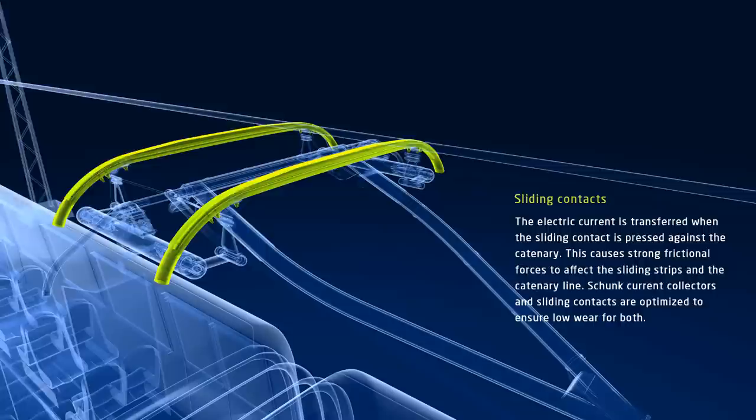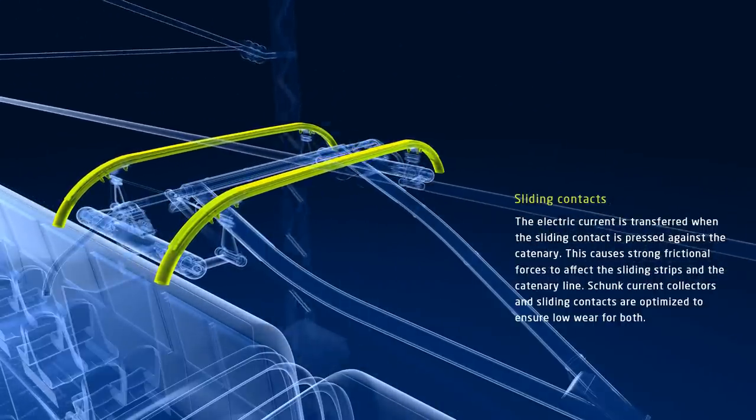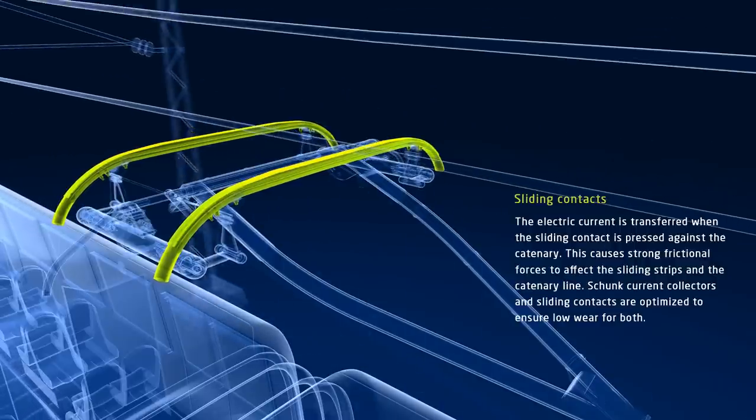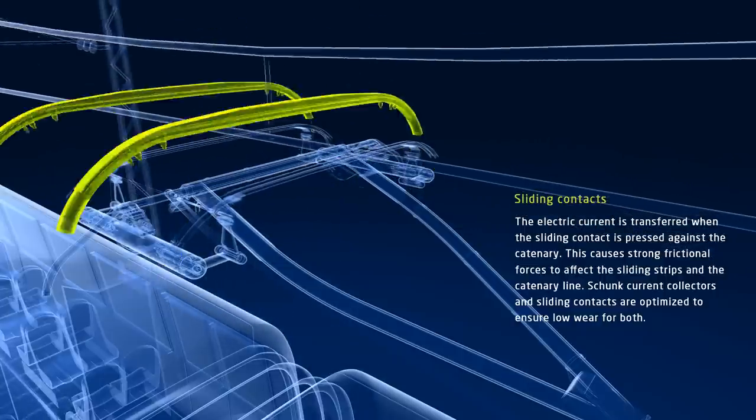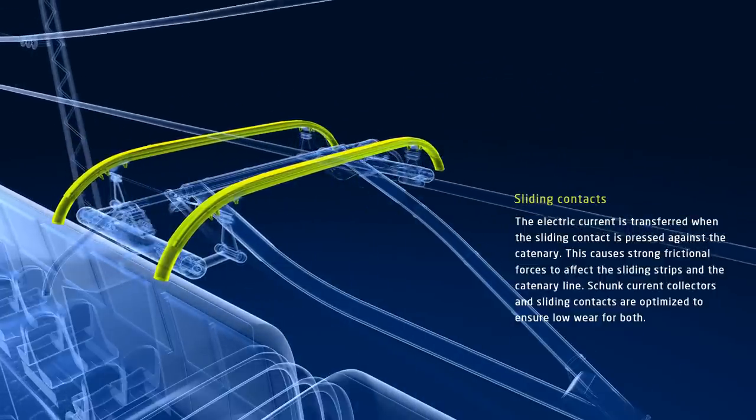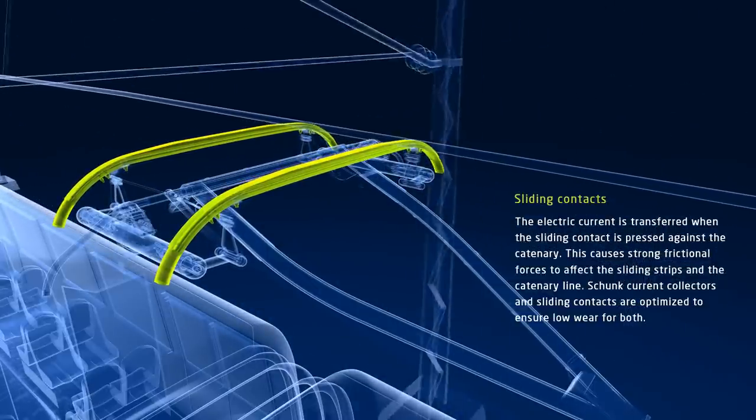The sliding strip performs an important function. As it is pressed against the catenary, it ensures electric current transfer. Strong frictional forces take effect on the sliding strip and the catenary line. Schunk has designed the structure and material of the current collectors and sliding strips such that the sliding strip and conducting wire are subject to very low wear.